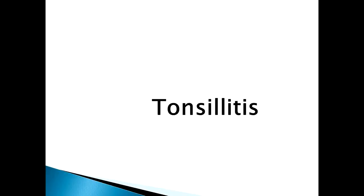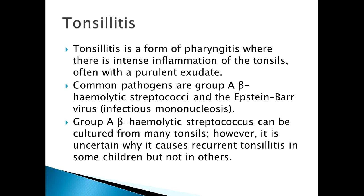First is tonsillitis. As you already know, tonsillitis is a form of pharyngitis in which there is an intense inflammation of the tonsils, often with a purulent exudate. There are common pathogens which are bacteria and viruses. An example in bacteria is Group A beta-hemolytic streptococci, and an example in viruses is Epstein-Barr virus, which causes infectious mononucleosis.